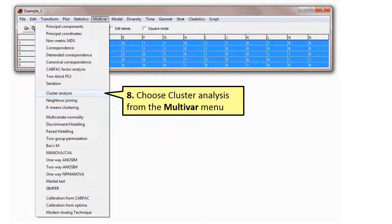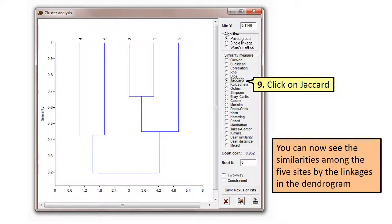The eighth step begins the analysis. Go to the multivariate menu and choose cluster analysis. The ninth and final step in running the analysis is to click on the Jaccard radio button.